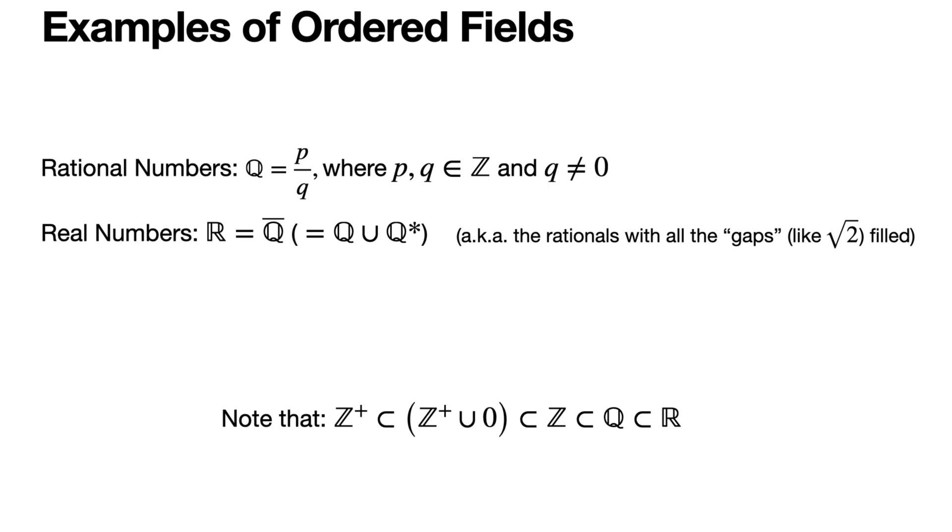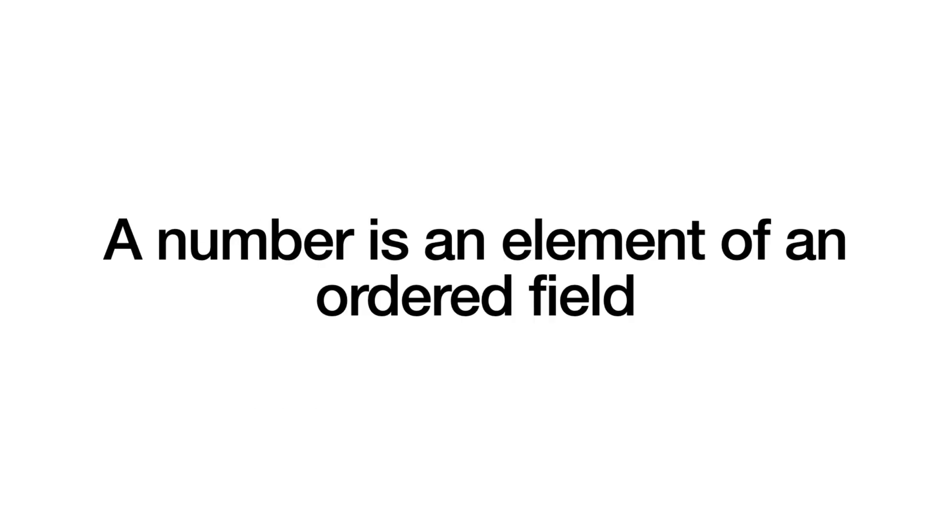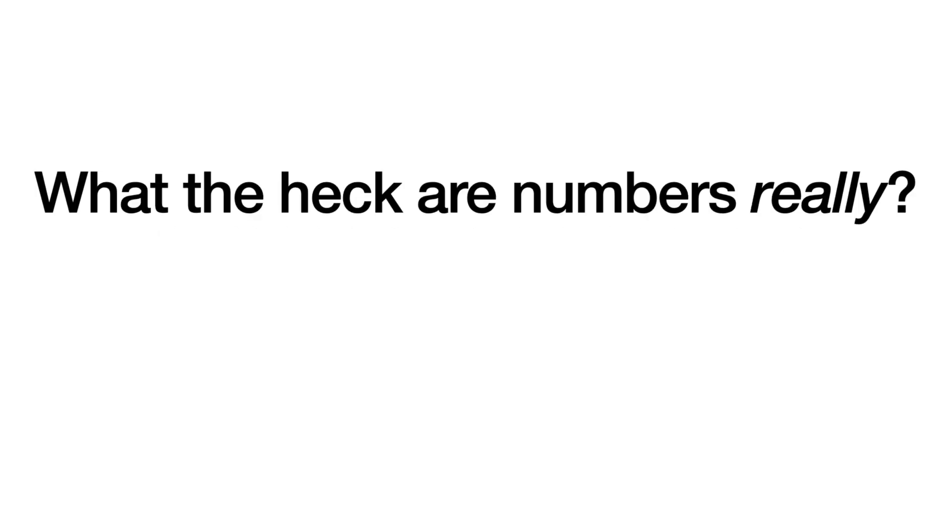And as a result, we now get to our final definition of what a number is. A number is an element of an ordered field. Now, the reals are clearly an example of an ordered field. The integers, including the positive integers, are of course elements of the reals, even though the set of integers and the set of positive integers are not themselves ordered fields. They are sort of subsets of what is an ordered field. So this explains how numbers are defined in terms of set theory. But what the heck are numbers really? And to be honest, we don't really know. However, while we may not know what numbers are, we can certainly say that whatever they are, infinity is not one of them. And that's going to be the topic of the next video.